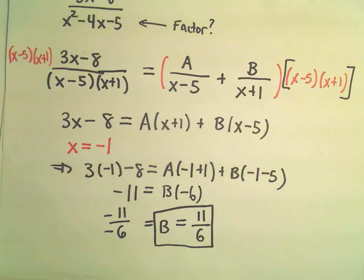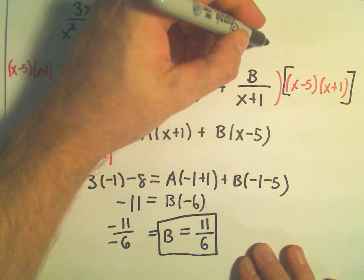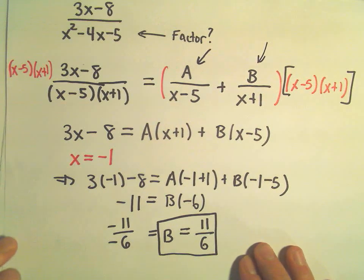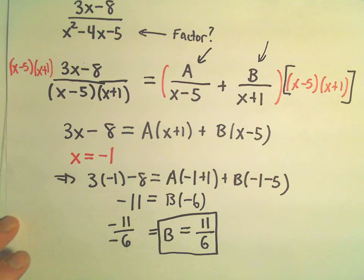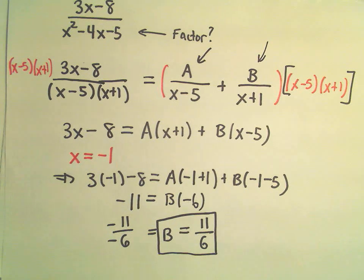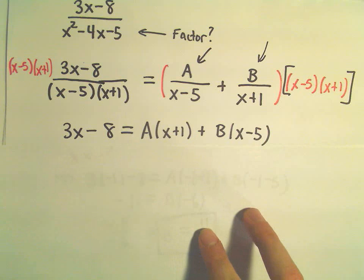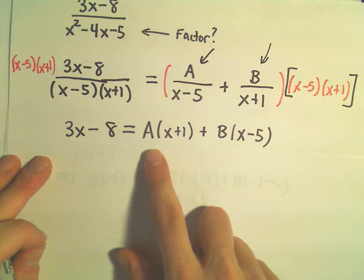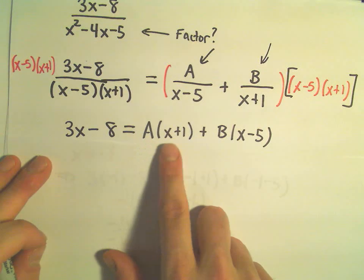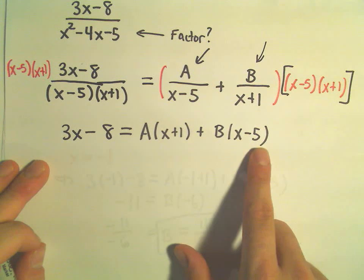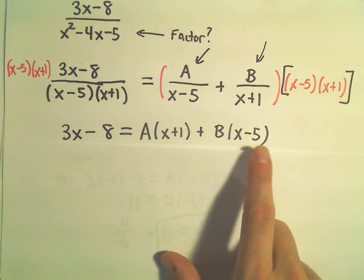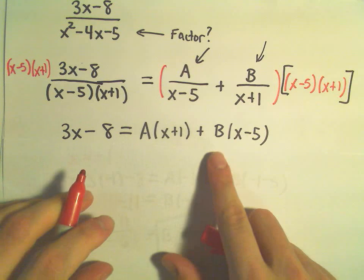So that's good. My whole goal, again, is to just try to figure out these constants A and B in my original decomposition. So I know my B value at this point. I'm going to do the exact same process, except now, instead of getting rid of my term involving the A, I'm going to get rid of the term involving B. Well, to get rid of the term involving B, I think I would have to plug in x equals positive 5.